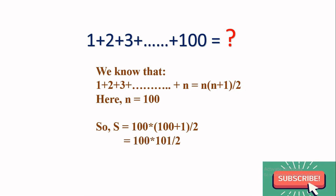100 into 101 divided by 2, you get the answer: 5050. That's the summation of the first 100 natural numbers.